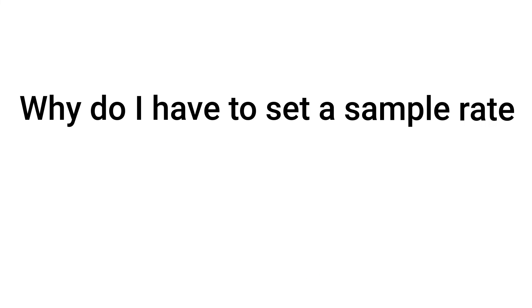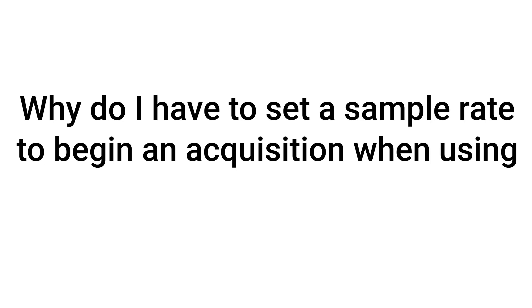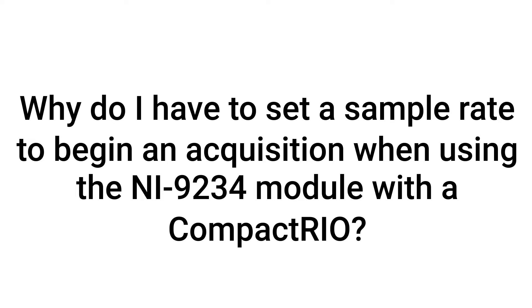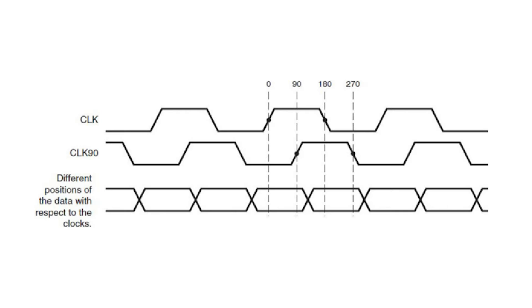Why do I have to set a sample rate to begin an acquisition when using the NI9234 module with a CompactRIO? The NI9234 is a dynamic signal acquisition module which utilizes delta-sigma converters and an oversample clock. The NI9234 must use the anticipated sample rate to configure the oversample clock.